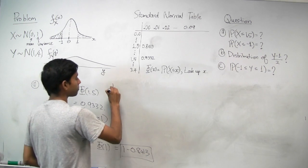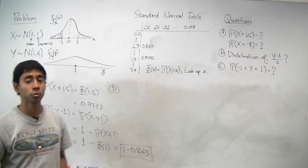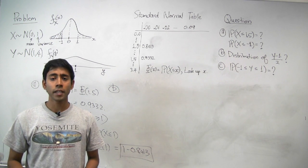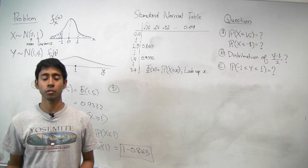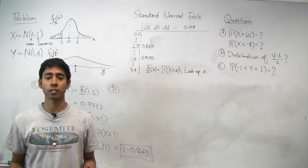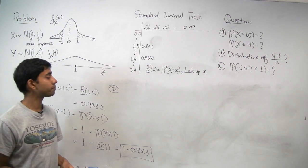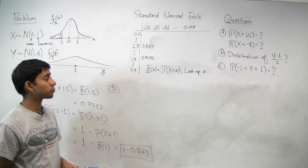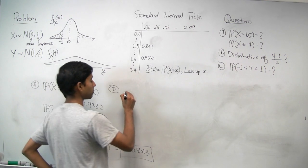For part B, we're asked for the distribution of Y minus 1 over 2. So any linear function of a normal random variable is also normal. And you can see that by using the derived distribution for linear functions of random variables. So in this case, we only need to figure out what's the mean and the variance of this normal random variable.